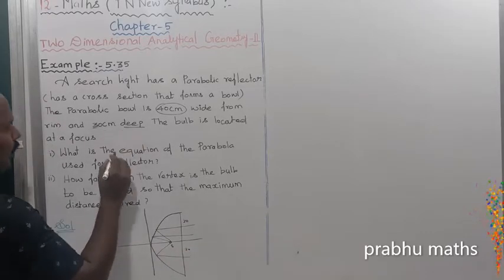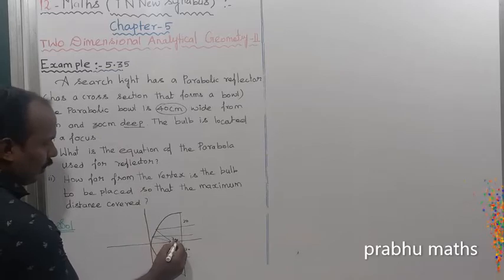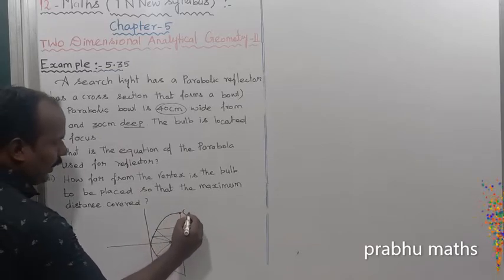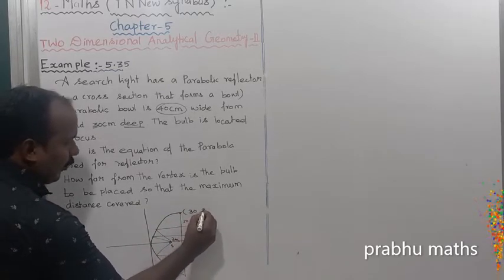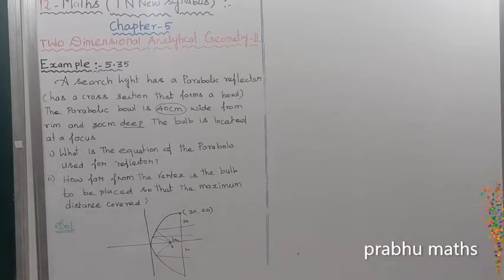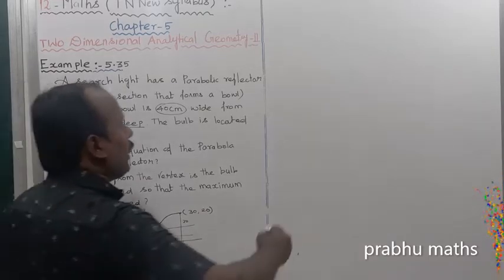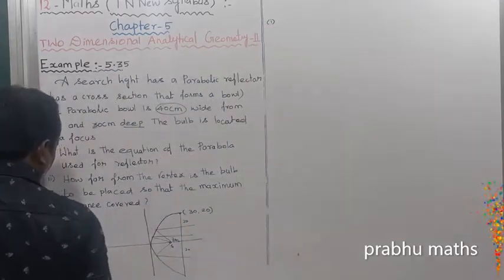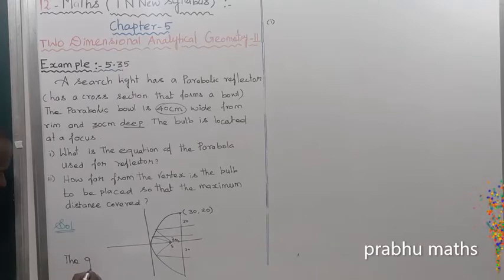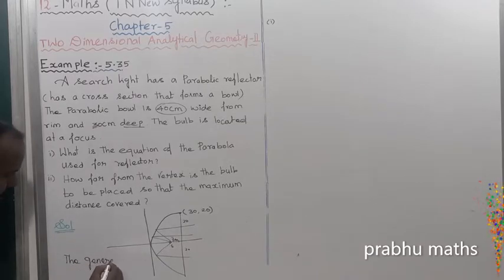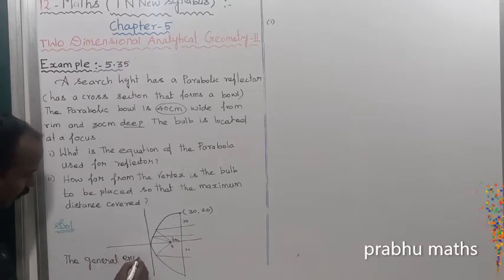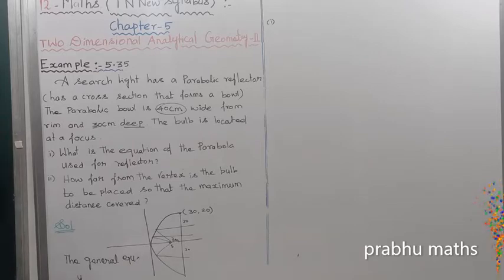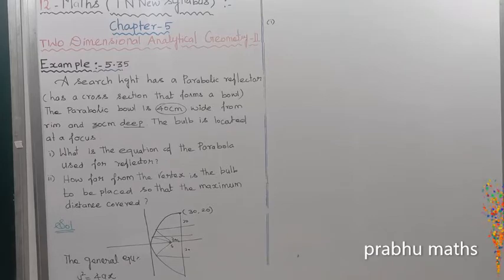This is a right-side open parabola. The general equation for this parabola is y² = 4ax.